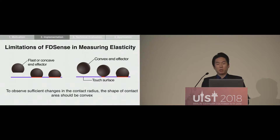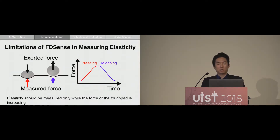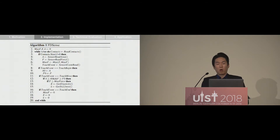Existing touchpads are not optimized for processing kinetic information, so FDsense requires two assumptions for more accurate elasticity measurement. First, a sufficient amount of change in the contact radius must be observed — to achieve this, the shape of the ND vector needs to be convex. Also, for reliable measurement, elasticity should be measured only while the force on the touchpad is increasing, because hysteresis in the measurement may exist when the ND vector is released from the touch surface. The final algorithm is implemented accordingly.